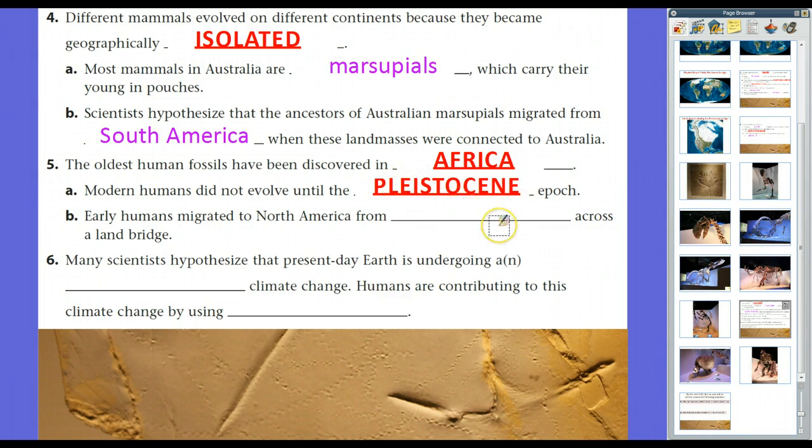And early humans went from Africa into Asia and Europe. And they came to North America from Asia across a land bridge at the Bering Strait up in Alaska. And at the end of the Pleistocene Ice Age, the water, the sea levels rose and Asia and North America got cut off.